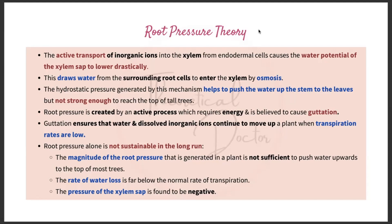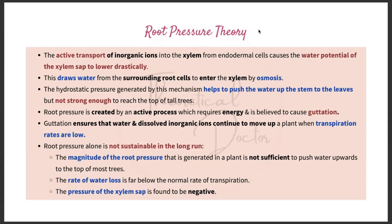Root pressure theory: it is the active transport of inorganic ions into the xylem from endodermal cells, and this causes the water potential of the xylem sap to lower drastically. This draws water from the surrounding root cells to enter the xylem by osmosis. The hydrostatic pressure generated by this mechanism helps to push the water up the stem to the leaves, but it is not strong enough to reach the top of tall trees.